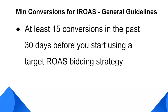To use target ROAS bidding strategy for your campaigns in a successful way, one thing that you need to consider is the number of recent conversions in your campaign or your account. Target ROAS is a smart bidding strategy and it performs best when there is a large volume of data, so that Google's machine learning algorithms can better position your ads in ad auctions. As a rule of thumb, Google recommends that your campaign should have at least 15 conversions in the past 30 days before you start using a target ROAS bidding strategy.